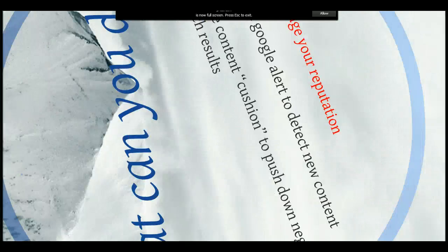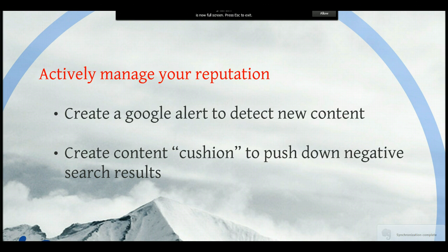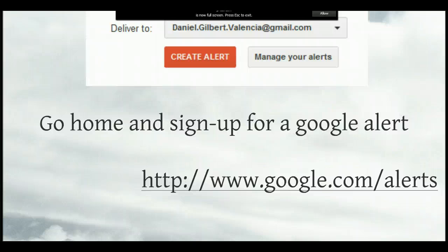What you can also do is actively manage your reputation. First and most importantly, create a Google alert to detect new content that's posted about you. It's very easy to do and just takes a couple of minutes. If you are a parent, you might want to create a Google alert about your children as well. You also want to create a content cushion to push down the negative search results — create some positive content out there, so when others Google you, they'll see that positive stuff first, or at least not just the negative stuff.